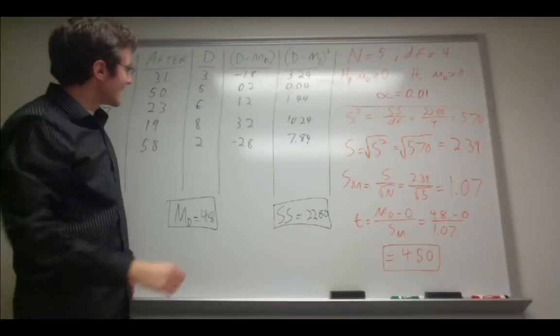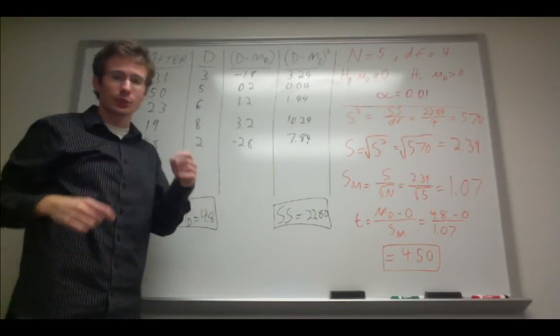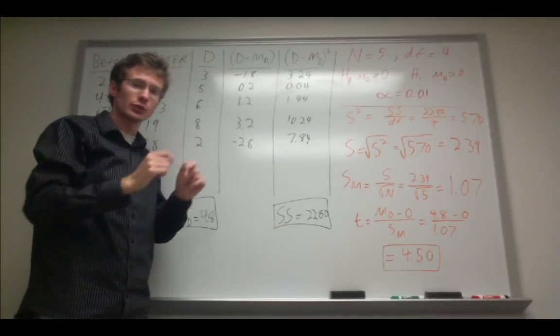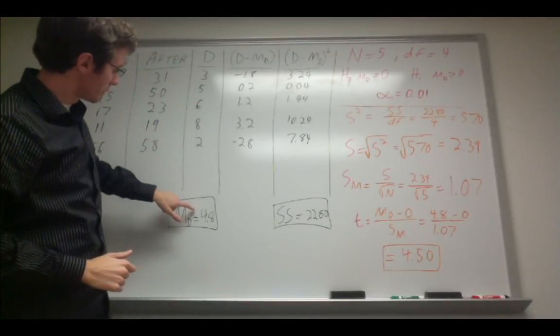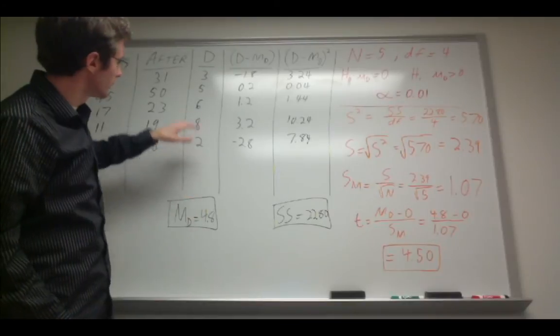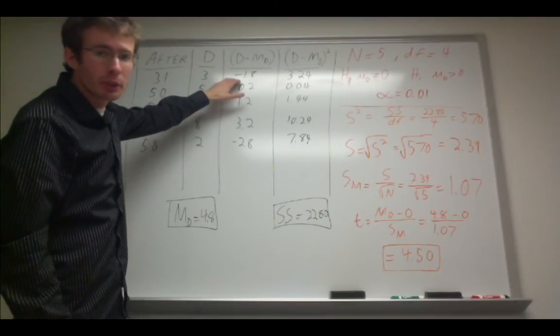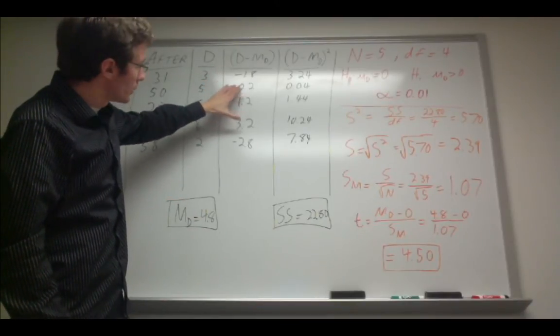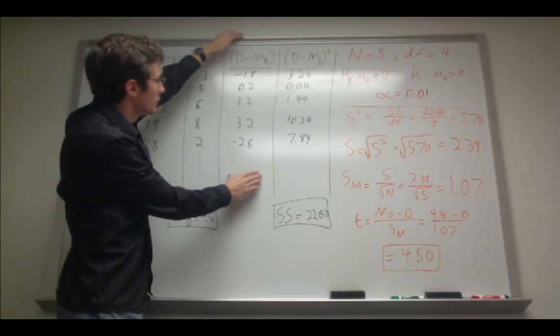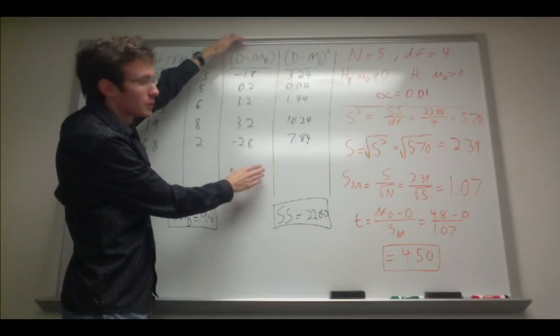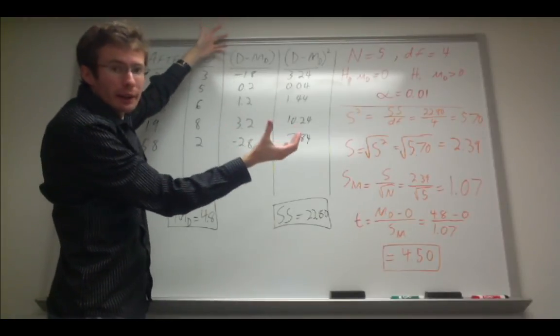Next I take each subject's difference and I subtract the mean difference from that difference. So three minus the mean difference of 4.8, this is for the first subject, it's going to be negative 1.8. And I do that for every single subject. So now in this column I have the difference between each difference score and the mean difference.